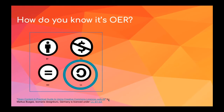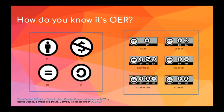Finally, we have share alike, or SA, which means others can distribute derivative works only under a license identical to the license that governs the work. These four conditions are combined in various ways to create different licenses. When you're choosing an OER, it's important to check the license and make sure you are fulfilling those required conditions. These are the six main licenses you may find, and it's a matter of breaking down each license into its components to understand what you can do with that material.